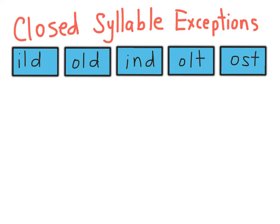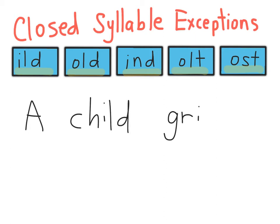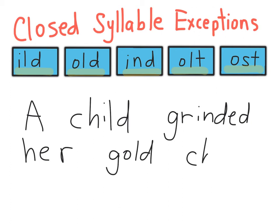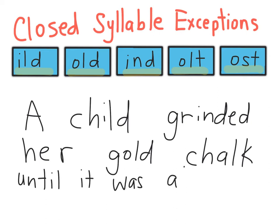Now get out your paper and your pencil, and let's try writing a sentence with words with the closed syllable exceptions: ild, old, ind, olt, and ost. The first sentence is: 'A child ground her gold chalk until it was almost gone.' A child ground her gold chalk until it was almost gone. Almost gone. Period.